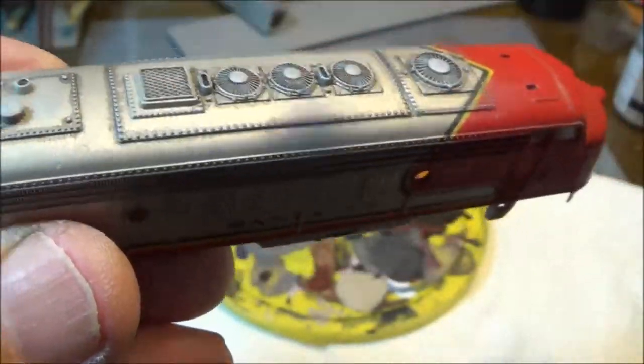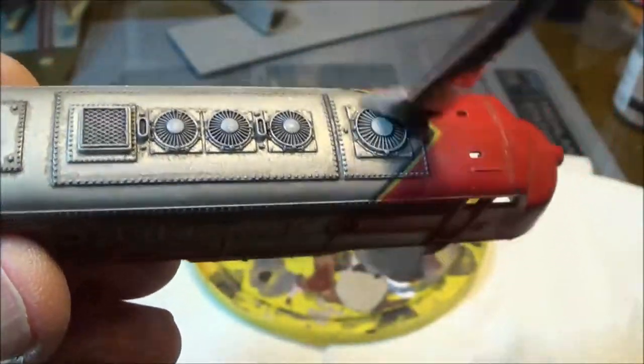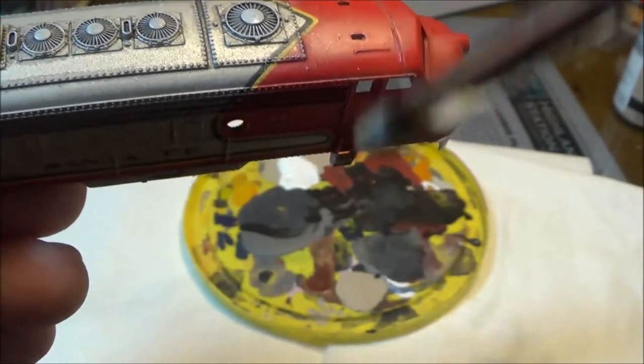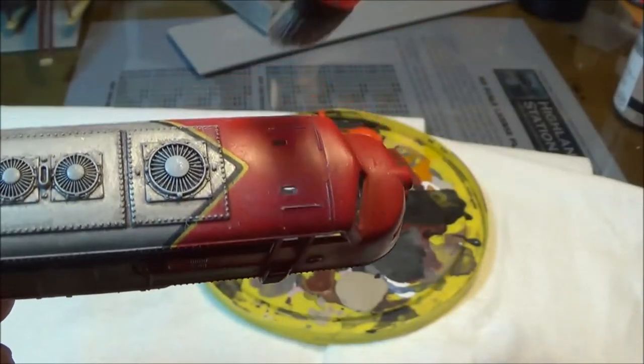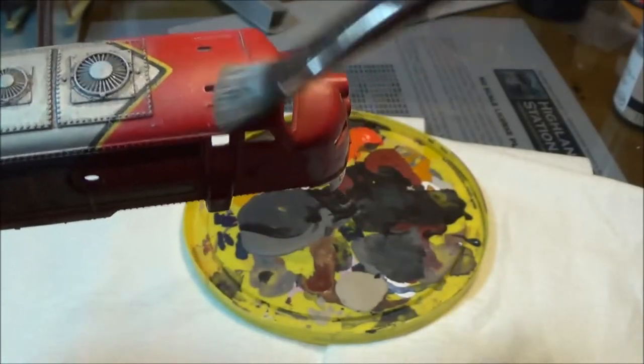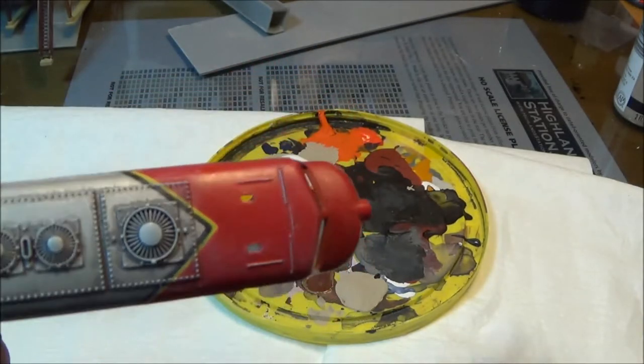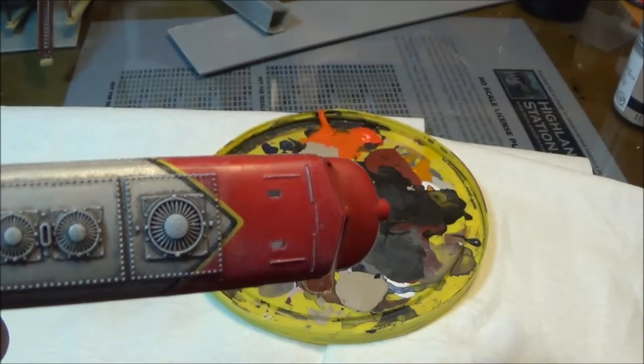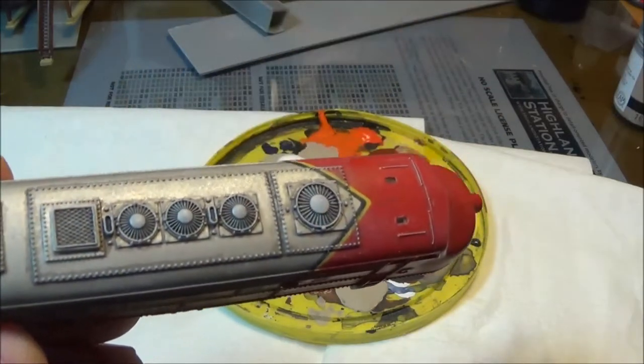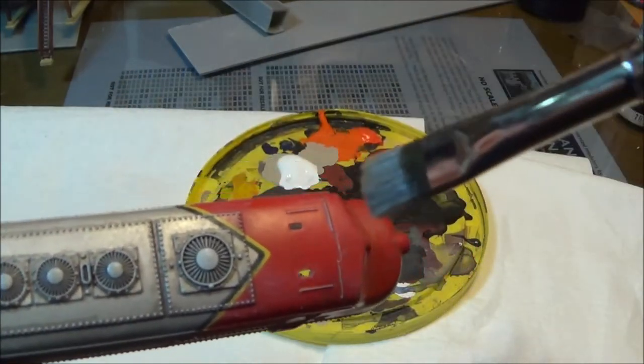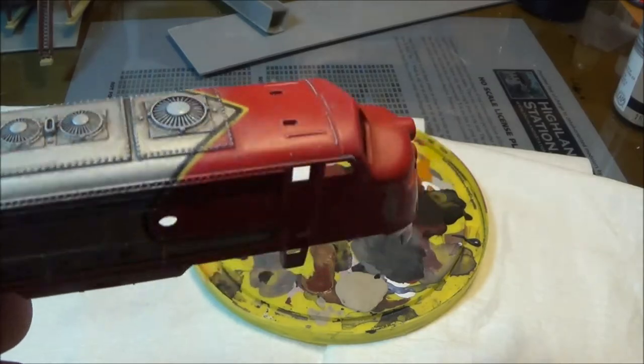So that's just doing it on a light colored locomotive. I can do it on even the red part up here on the grab irons, the molded in grab irons, and you can see it brings them right out. And we could have used the black around those, I didn't, but we could have.